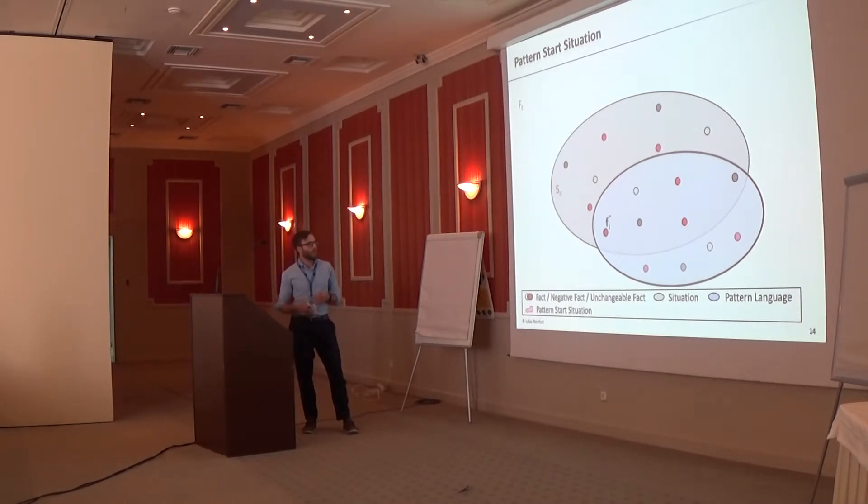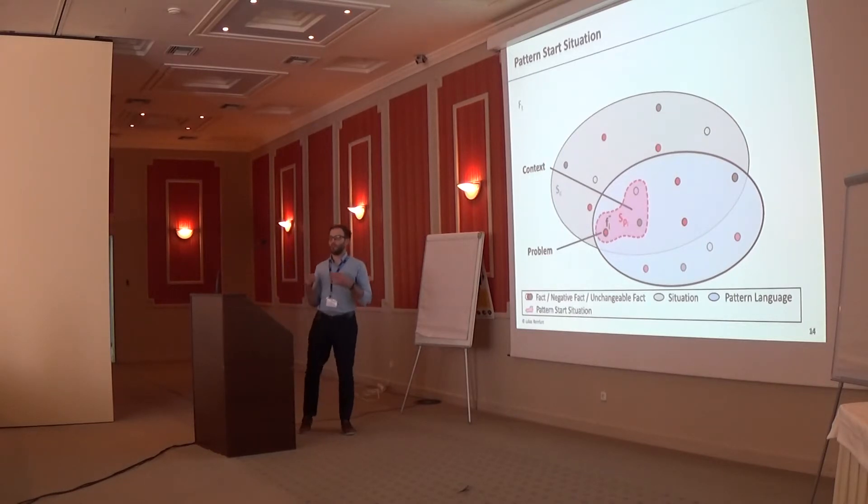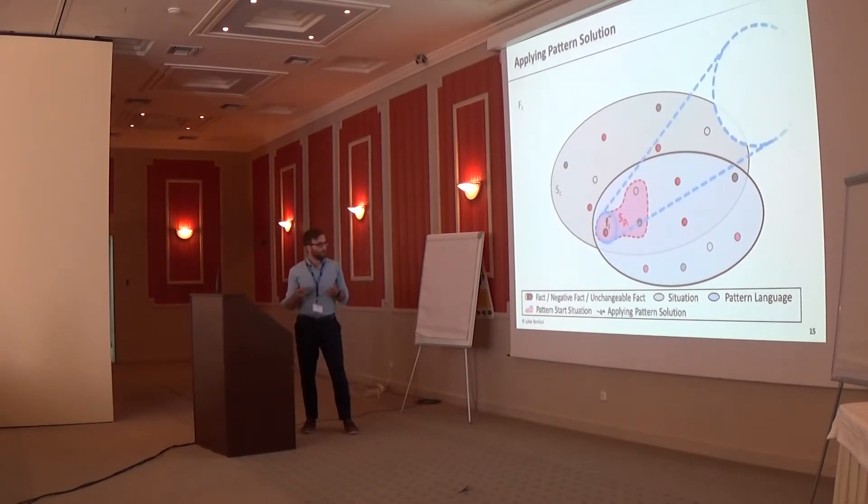Then we have, for example, this negative effect down here, for which there now is a pattern in this pattern language to solve this problem. And at the beginning, before we apply the pattern, we have this pattern start situation, which consists of the problem, obviously, and then also some of the other facts that describe the context in which the problem is solved in this pattern. And now we can apply the solution of the pattern. This works by negating the negative fact, and by this, the negativity is resolved, and this fact is no longer negative, and our problem disappears.